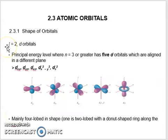When L equals two, it is called d orbitals. D orbitals have five orientations: dxy, dyz, dxz, dx²-y², and dz².